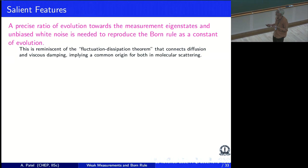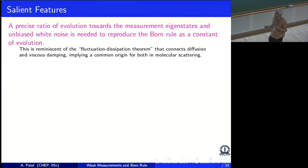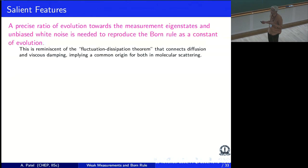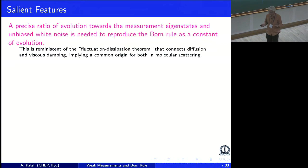This Einstein relation was actually a strong demonstration of kinetic theory, much before individual atoms could be observed. There is a common origin. Since quantum dynamics will display a similar property, the question comes: are the noise and this attraction towards the measurement eigenstate related by some common underlying feature? What it is, we don't yet know.